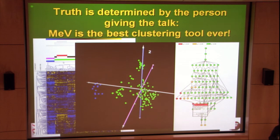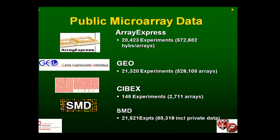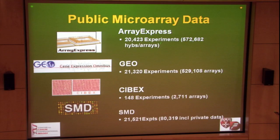Microarray profiling really represented a renaissance in terms of looking at genes and gene functions. There's just been a huge amount of data generated. If you sum all of these up, there are well over a million arrays worth of data in a variety of different public resources — ArrayExpress, GEO, a Japanese resource, the Stanford database. What has really happened is there's been an explosion in the number of assays that have been done.